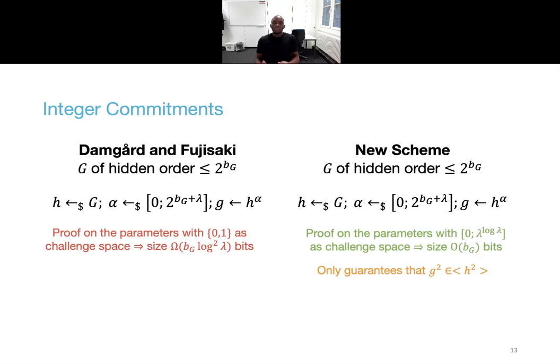As mentioned before, for the scheme to be hiding is absolutely crucial that g is in the subgroup generated by h. It means that if the party which computes g is not trusted, then it should also output a proof that g is indeed in the subgroup generated by h, as there is no efficient way to actually test that. Damgaard and Fujisaki gave a proof of discrete log in the subgroup generated by an element h, and is simply an adaptation of Schnorr's protocol, with 0,1 as challenge space.